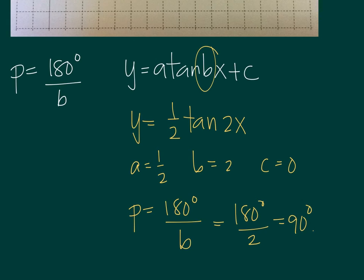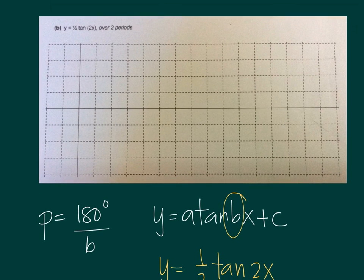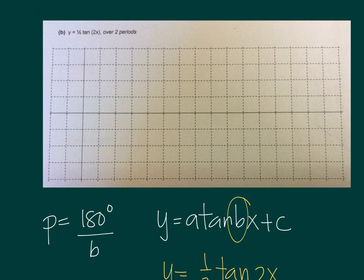So to graph the tangent function, we can now create one period. So this is the strategy we use for tangent. Once you identify the period, you plot that angle, in this case 90 degrees. We use two grid lines, so 1, 2, and then we set the period, so 90 degrees, and then immediately take the half of the period, and that will serve as the asymptote.